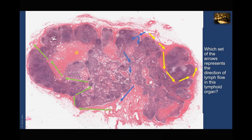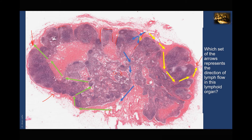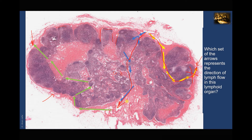Which set of arrows represents the direction of lymph flow in this lymphoid organ? This is a lymph node which acts as a filter for lymph. There are multiple afferent lymphatic vessels, some with valves that prevent backflow of lymph. The lymph comes from the afferent lymphatic vessel into the subcapsular sinus, trabecular sinus, and the medullary sinus before leaving through the efferent lymphatic vessel. The yellow set of arrows comes from the afferent lymphatic vessel into the subcapsular and trabecular sinus, but the direction then goes back to the afferent lymphatic vessel — which is incorrect. The lymph should go into the medullary sinus and then the efferent lymphatic vessel. So the correct set of arrows represents this proper direction of lymph flow.